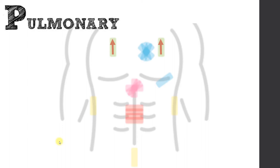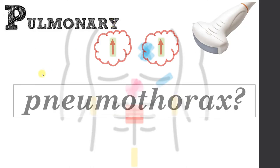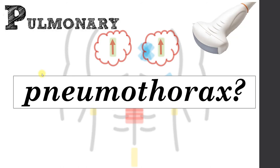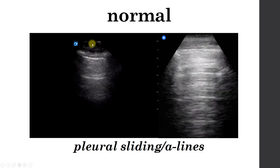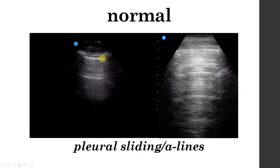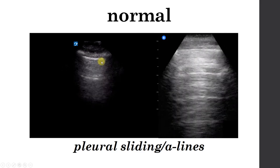Moving on to the last step of the RUSH exam — the P of HIMAP, the pulmonary assessment. For this exam, I usually stick with the abdominal probe, but you can use any probe including the linear or cardiac probe. Place the probe on the anterior chest in about the third or fourth intercostal space with the indicator aiming up towards the patient's head. The main question is: does the patient have a pneumothorax? If they do and the patient is hypotensive, that would make me think about a tension pneumothorax. Here is an example of a normal lung — you see the skin and soft tissue, the pleural line sitting just beneath the intercostal muscle, and lungs sliding.